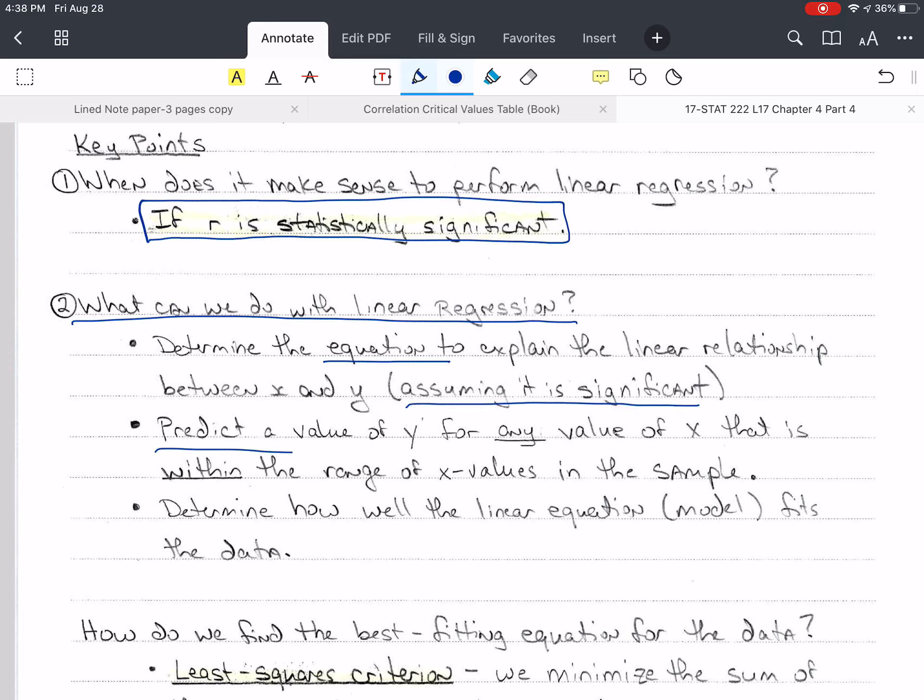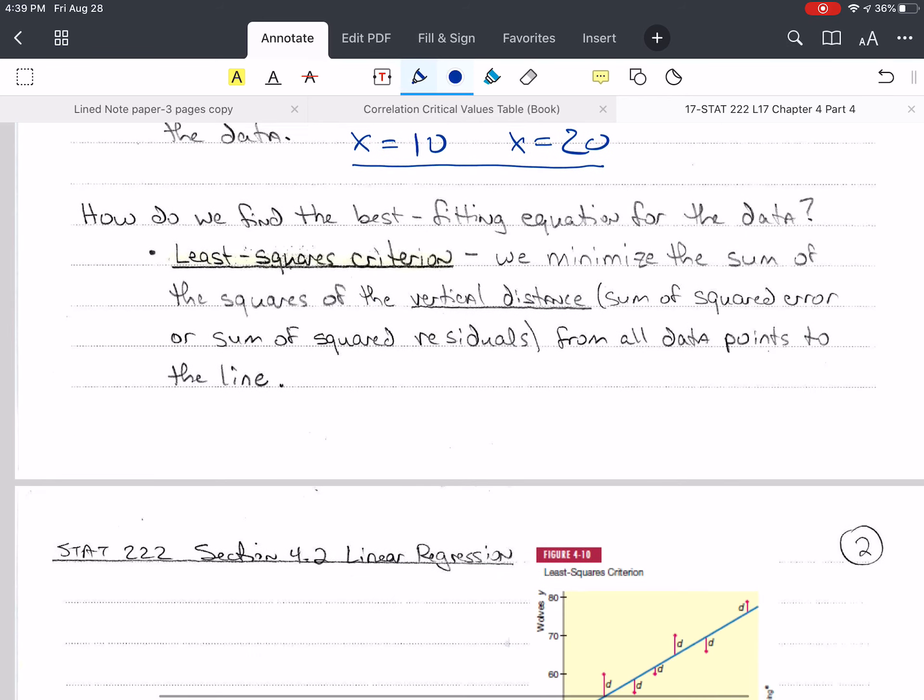Here we have to worry about the range of X. Let's say X goes between 10 and 20 in our sample. Then the only values of Y that we can predict are for values of X that fall between 10 and 20. If we get outside of that, we may not know the right prediction because the equation of the line could change outside of that range, because we don't have any data.